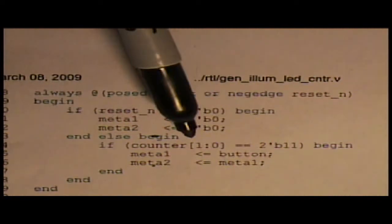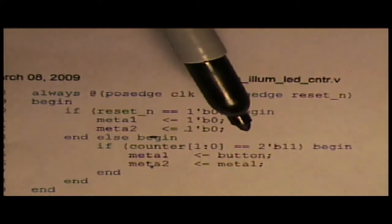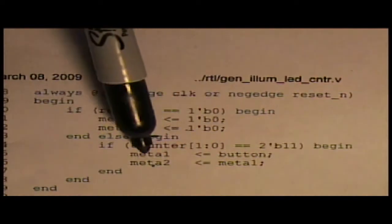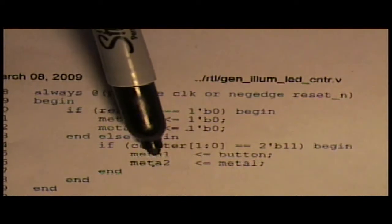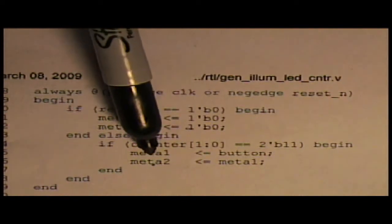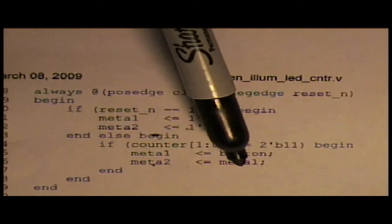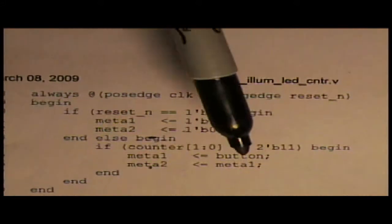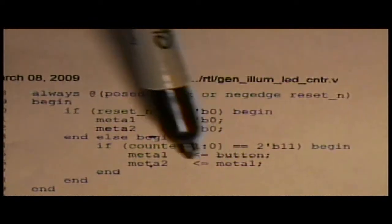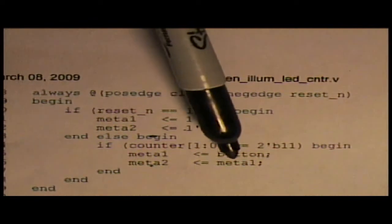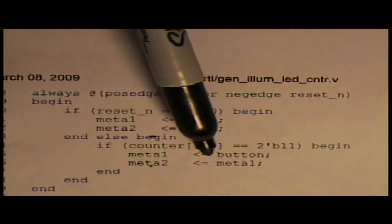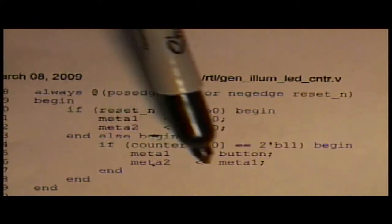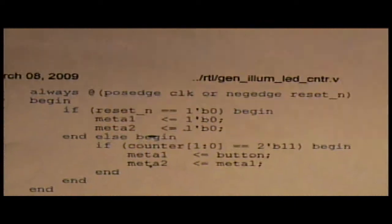So once every fourth count gets moved into this flip-flop and then meta one, whatever its value is, gets moved into the next one. This is a shift register is what I just generated. So it gets shifted through. If a one goes here on the button, the next clock cycle will be here, and on the next clock cycle it gets moved to here.